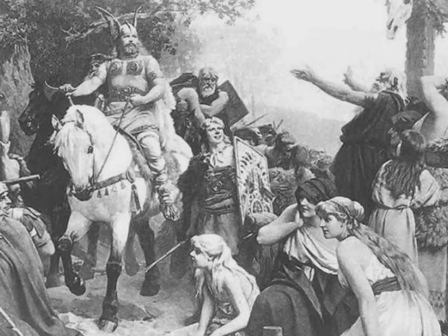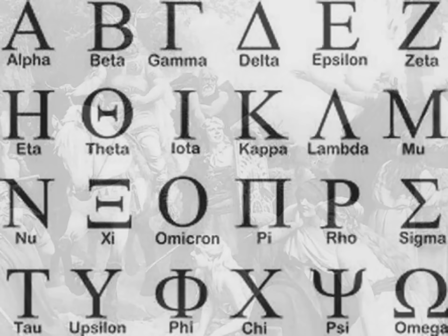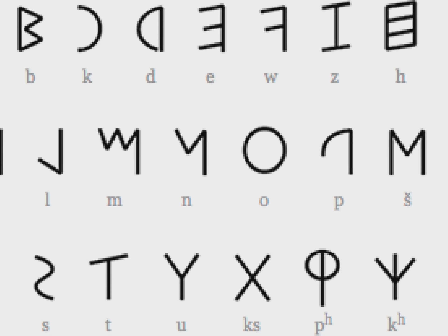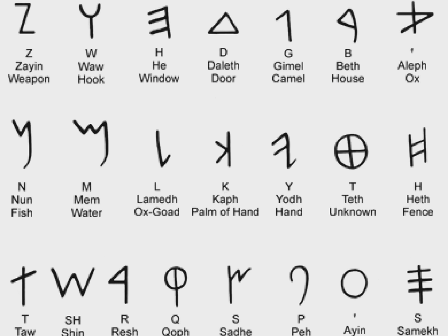Runic alphabets first appeared among German tribes in Central and Eastern Europe. Some rune symbols are likely to have been acquired from other alphabets, such as the Greek, Etruscan, and Early Roman.